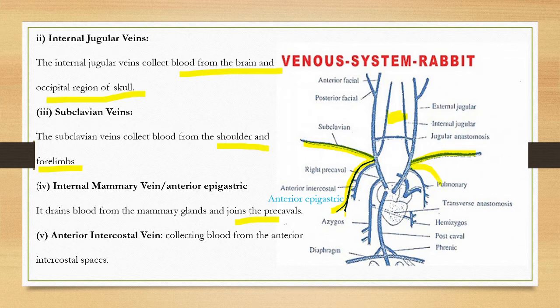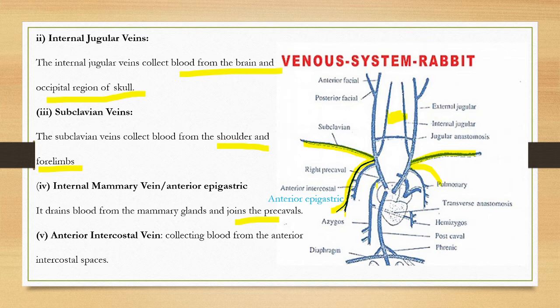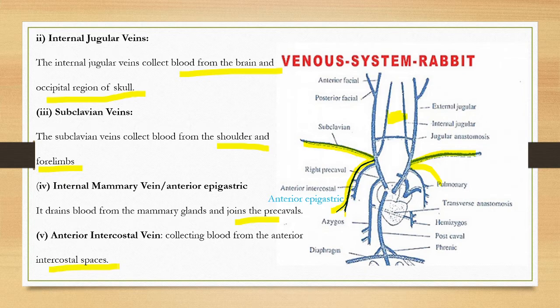The anterior epigastric vein is present on right and left sides. The anterior intercostal veins collect blood from the anterior intercostal spaces or muscles. These are the anterior intercostal muscles and their branches join the right precaval.